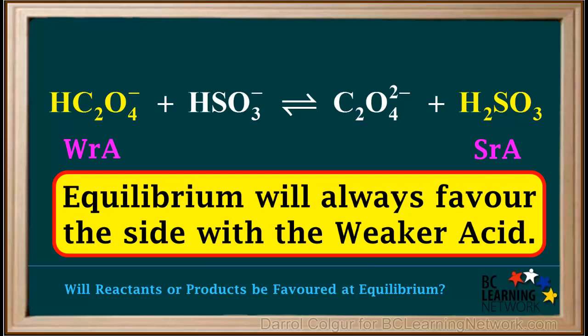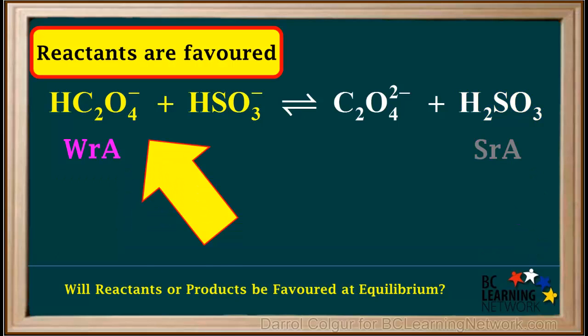Now we recall that equilibrium will always favor the side with the weaker acid. Because the weaker acid is on the reactant side, we can say that reactants are favored at equilibrium. We now have answered the second question.